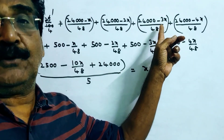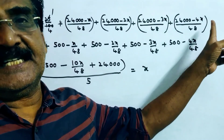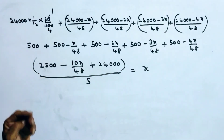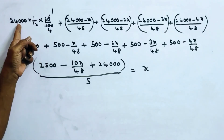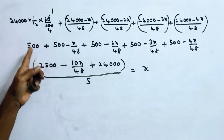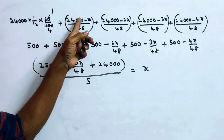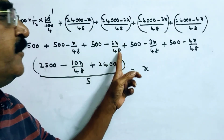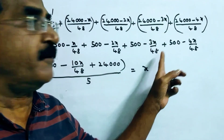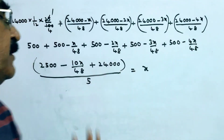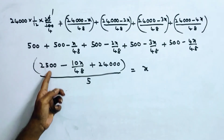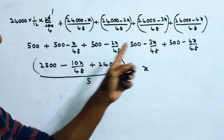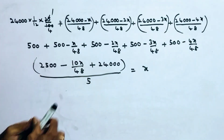The interest for the third month is (24,000 − 2X) / 48, for the fourth month (24,000 − 3X) / 48, and for the fifth month (24,000 − 4X) / 48. The total interest across all five months is: 500 + (500 − X/48) + (500 − 2X/48) + (500 − 3X/48) + (500 − 4X/48), which simplifies to 2500 − 10X/48.